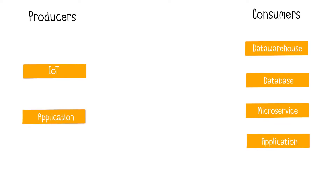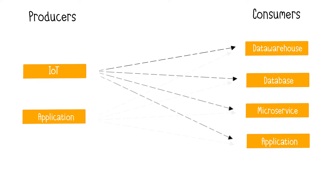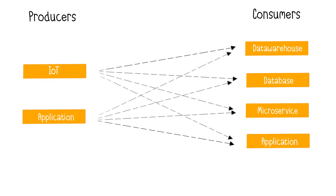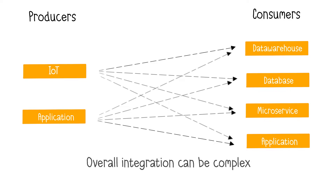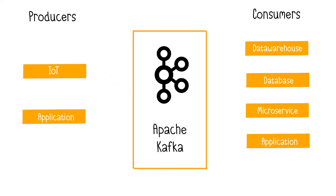Data exchanges happen as data-producing systems transmit information to data-consuming systems. By data systems, I mean applications, databases, microservices, IoT devices, data warehouses, or data lakes, for example. However, each system has its own way of communicating — its unique communication protocol, data format, or data schema. This complexity makes overall integration challenging and time-consuming. This is where Kafka comes in as an intermediary to decouple data producers and consumers, addressing the significant challenge with a massive increase in applications and data exchange volume.